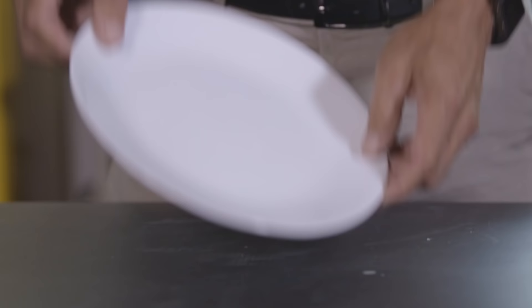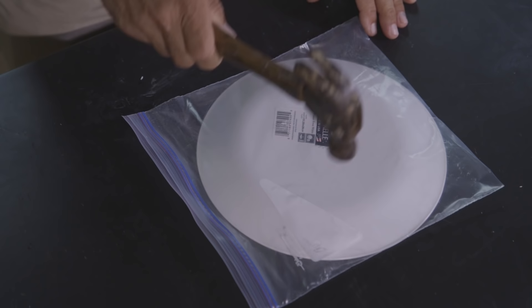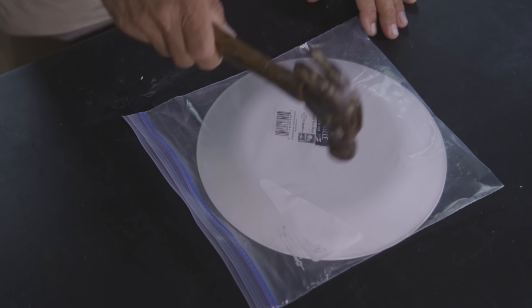So when you drop a Corningware plate, it actually tends to not break. And that's a real advantage if you're a consumer of these types of products. However, if you scratch or nick a Corningware plate and then you drop it, it could shatter into a million pieces. And what you're effectively doing is releasing all that stored mechanical strain energy inside the glaze.